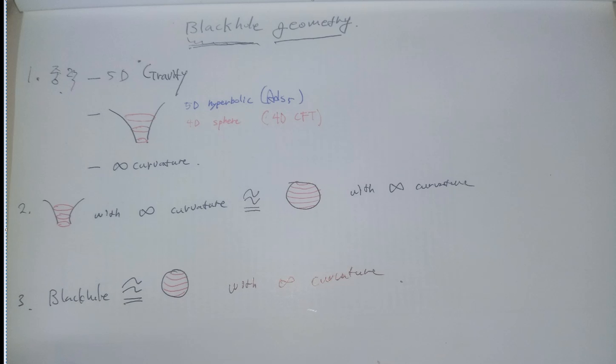To understand black hole geometry, first we have to know what is black hole. Black hole is the object within maximum gravity in finite area. It is the definition for black hole. So if we know the gravity geometry, we can understand the geometry of black hole.